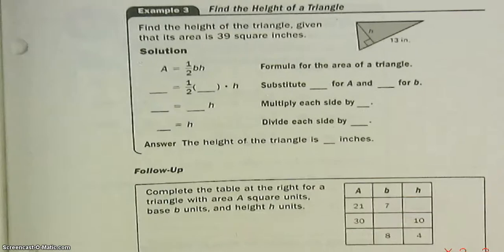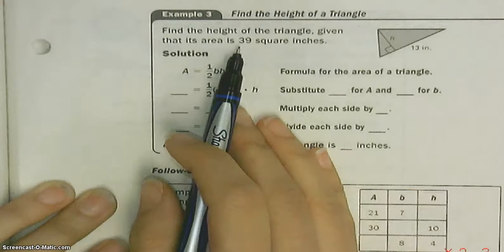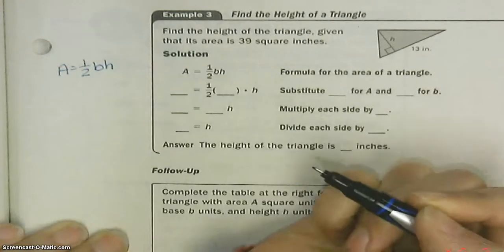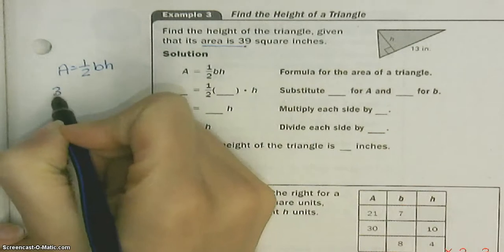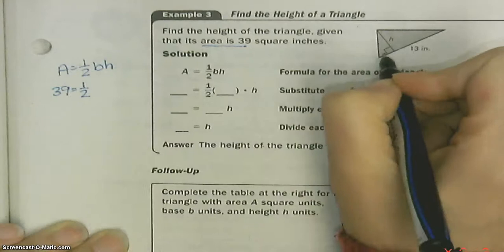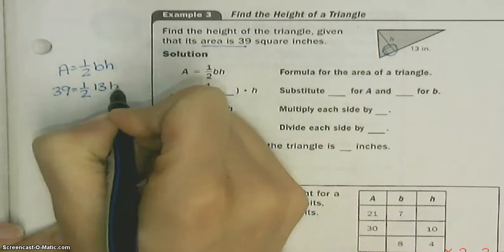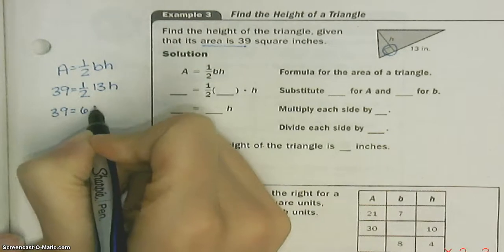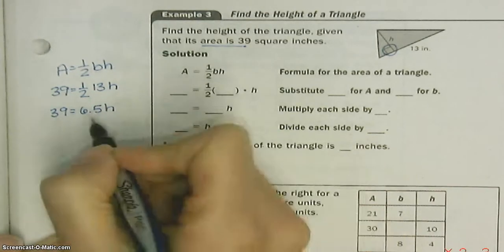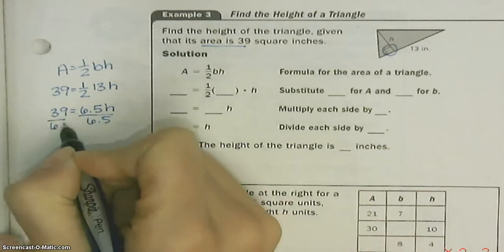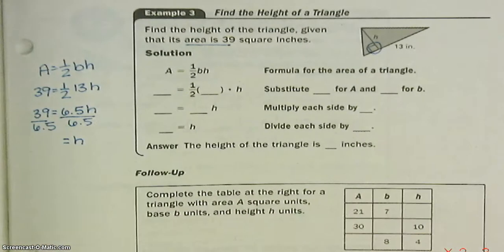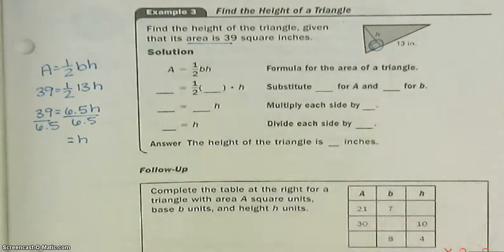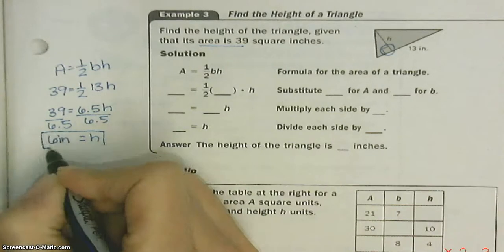Now we have to find the height of the triangle. We know the area is thirty-nine and the base is thirteen. Write the formula: area equals one-half the base times the height. Plug in: thirty-nine equals one-half times thirteen times H. Notice here's our right angle — that's the base and the height. I don't know what the height is, so I'll leave that as H. One-half of thirteen is six-point-five, so thirty-nine equals six-point-five H. Divide both sides by six-point-five. Thirty-nine divided by six-point-five gives H equals six. When we're talking about height, it's just regular units — not squared. Area is what is squared.